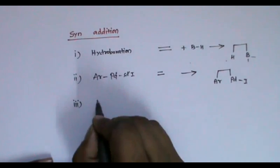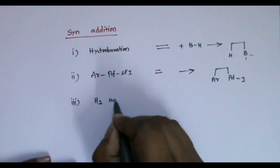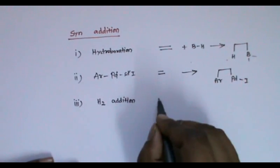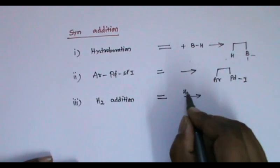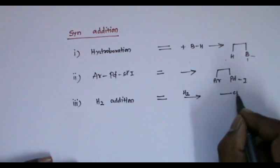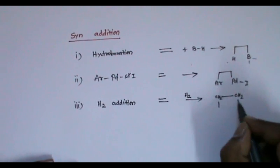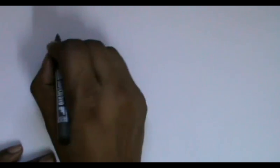The next syn addition reaction is H2 addition — that is, reduction of a double bond with H2 — which gives the syn addition product. Now moving on to anti addition.